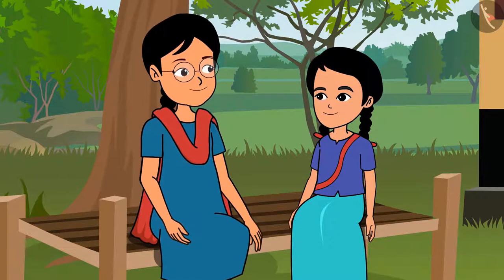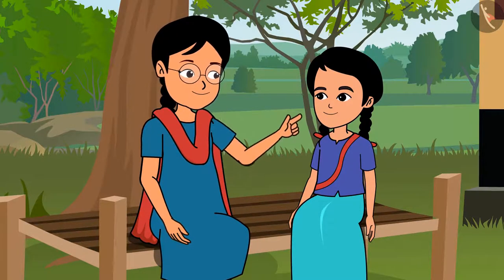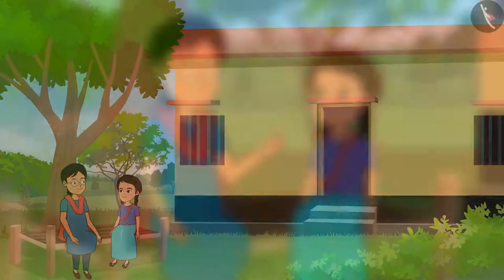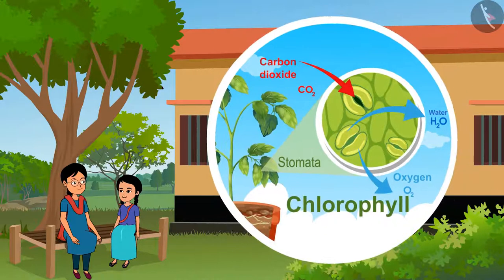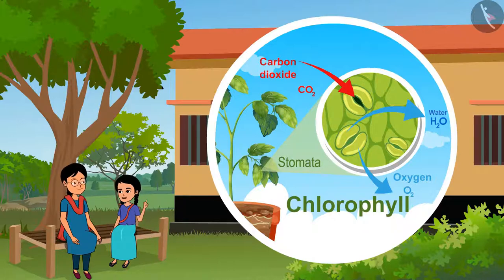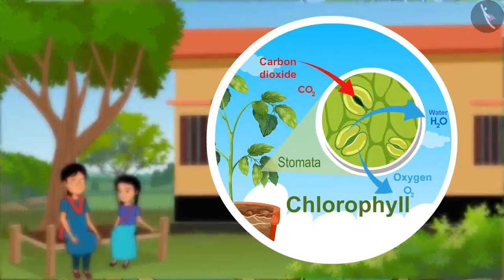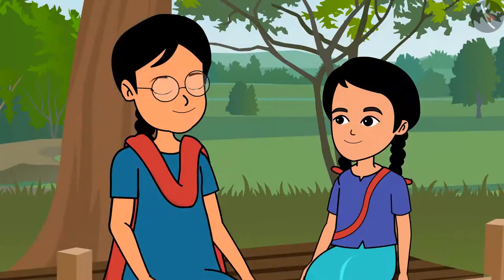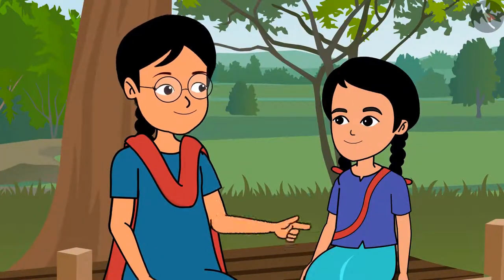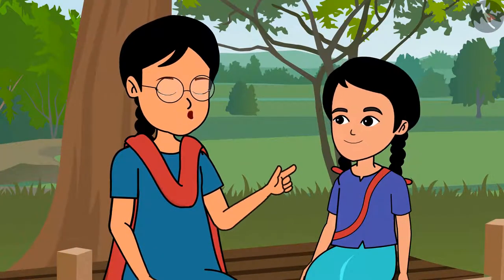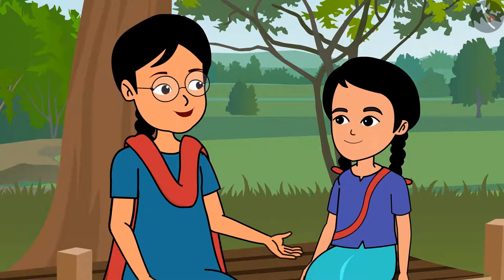Which part of the plant does photosynthesis? Green leaves have chlorophyll, and there are small openings on leaves known as stomata. This is the centre for exchange of gases on the leaf. So, plants and trees breathe through the help of stomata.